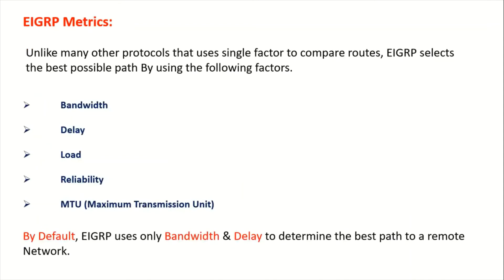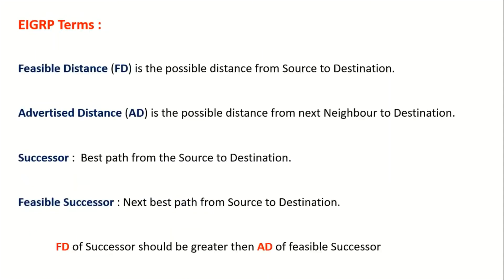EIGRP metrics include five different values: bandwidth, delay, load, reliability, and MTU. By default, EIGRP considers bandwidth and delay to determine the best path to a remote network.